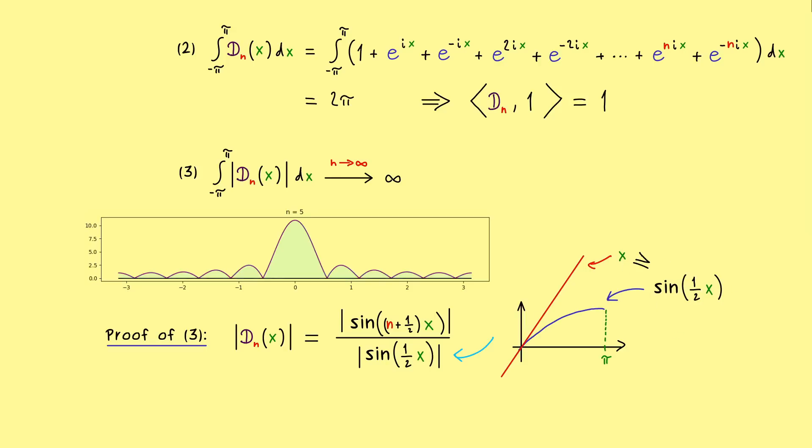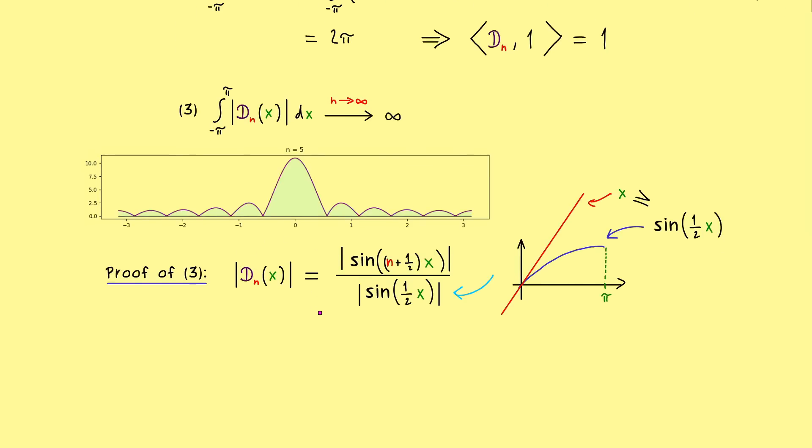And this holds no matter which positive x we choose. And this is enough, because we can split up our integral into two parts. Namely, it's two times the integral from 0 to π. And there we can use our estimate, and everything looks much simpler.